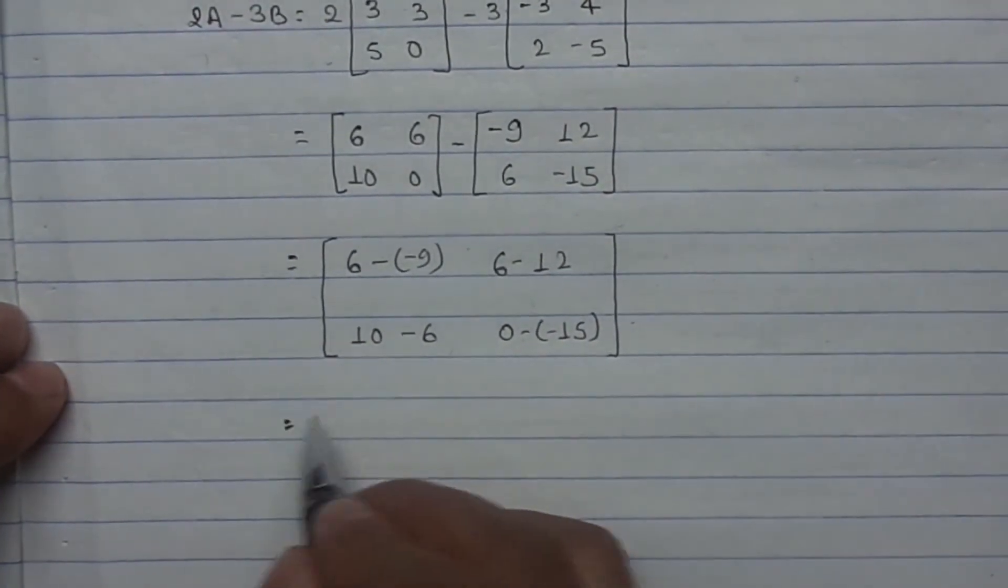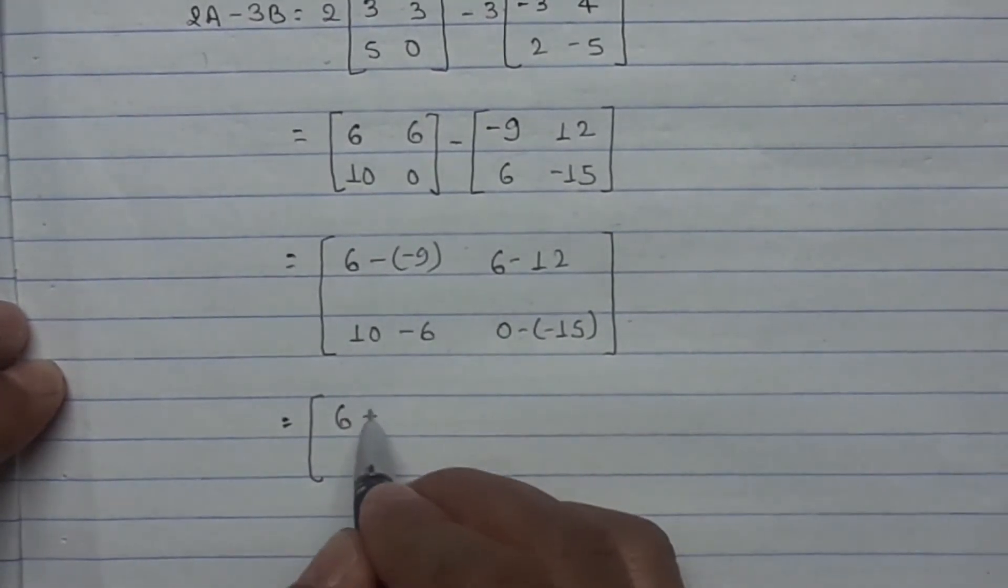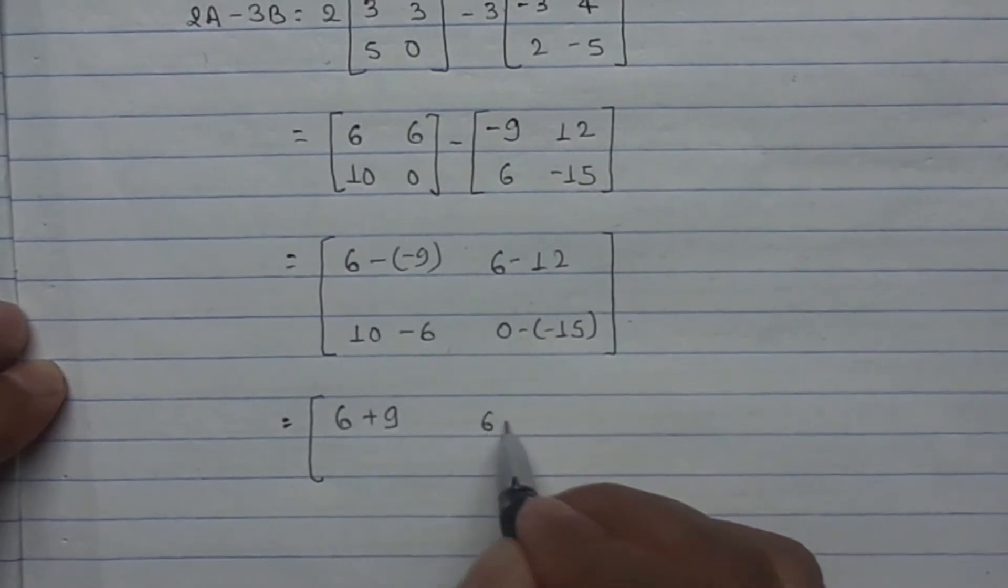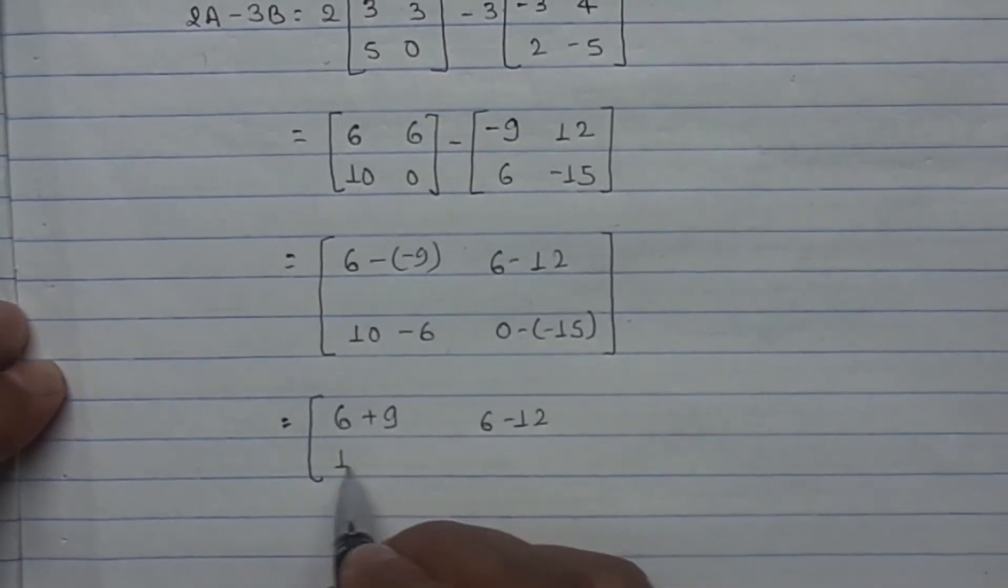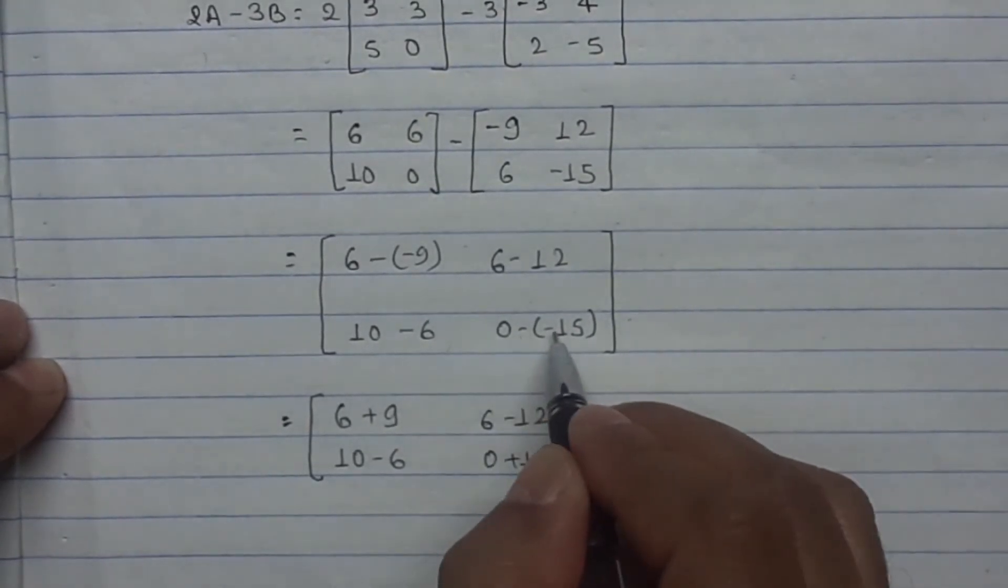Then equals to 6 minus minus plus 9, 6 minus 12, 10 minus 6, 0 plus 15. Minus into minus is plus.